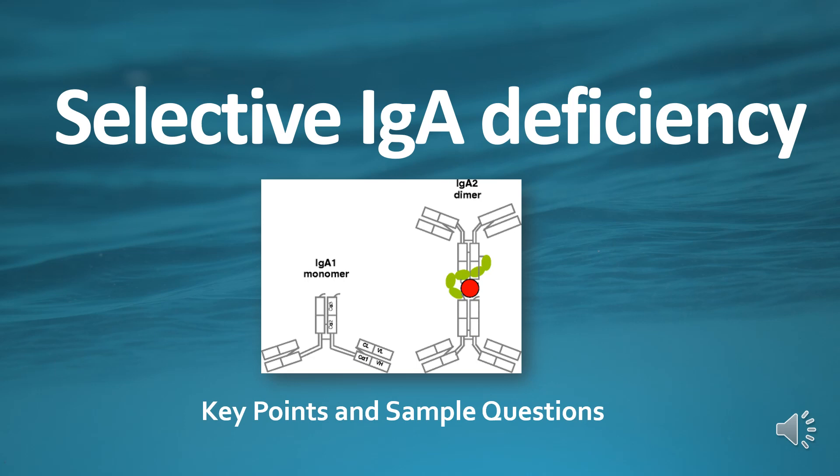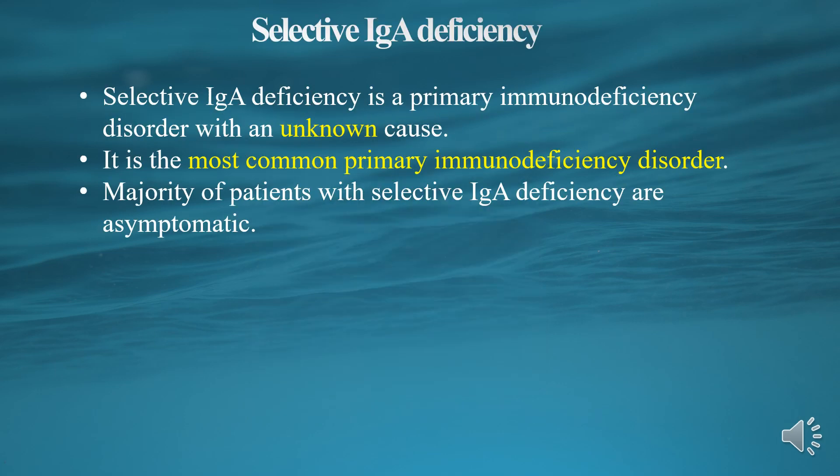In this short video, we will discuss selective IGA deficiency. There will be some questions at the end of the video. Selective IGA deficiency is a primary immunodeficiency disorder with an unknown cause. It is the most common primary immunodeficiency disorder.